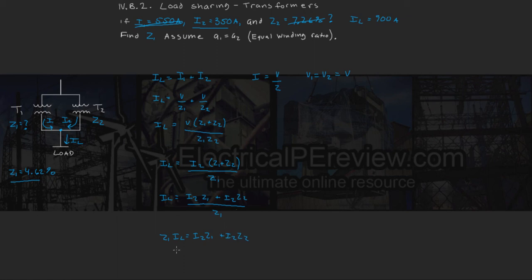We can simplify this as Z1 IL over I2 equals Z1 plus Z2. And since this time around we're going to solve for Z2.